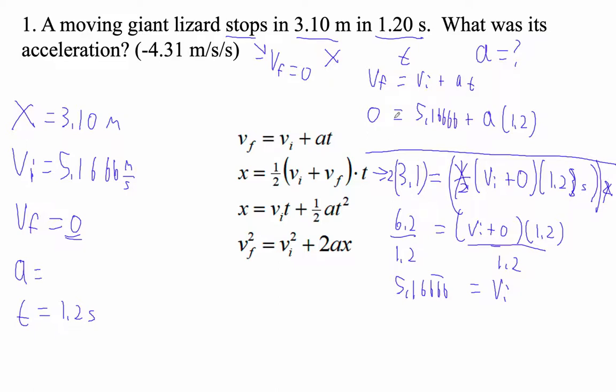My next step, by the way, is to subtract 5.166 from both sides. So minus 5.1666 equals A times 1.2. And then the next step is to divide by 1.2. So that's what I'm doing here.